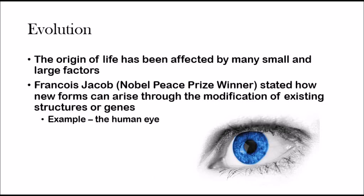One big lesson that we have learned throughout the history of life and through this unit is that the origin of species has been affected by both small-scale factors such as natural selection occurring in populations and large-scale factors such as continental drift and mass extinctions. The Nobel Peace Prize winner Francis Jacobs stated that evolution is a process of tinkering, a process in which new forms arise by the modification of existing structure or existing genes.